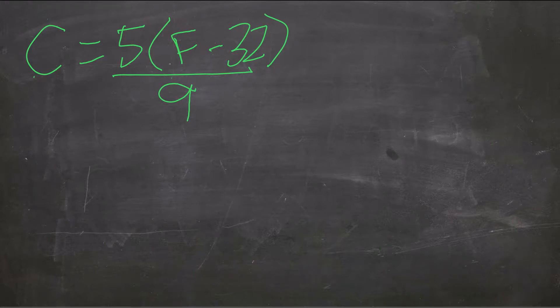Hi everybody. Here's an example of turning a Fahrenheit degree into Celsius. The formula we're going to use is Celsius equals 5 times the quantity F minus 32 all over 9.